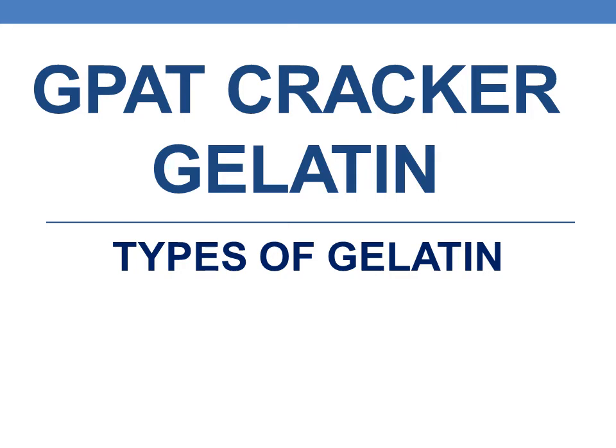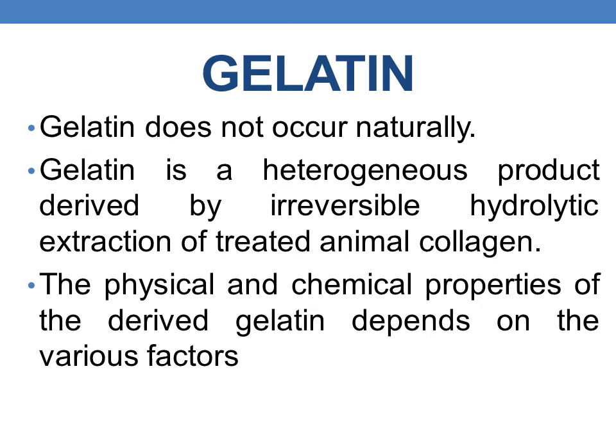Hello everyone. Today we will be discussing about types of gelatin. So what is gelatin? Gelatin does not occur naturally. It is a heterogeneous product derived by irreversible hydrolytic extraction of treated animal collagen. So collagen is the source of gelatin.